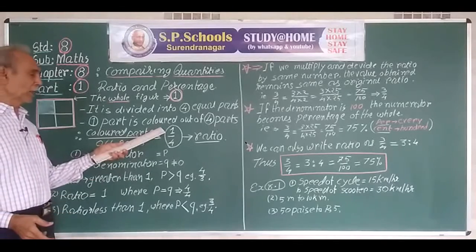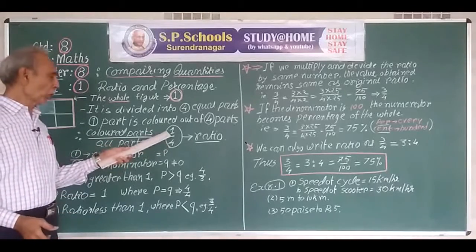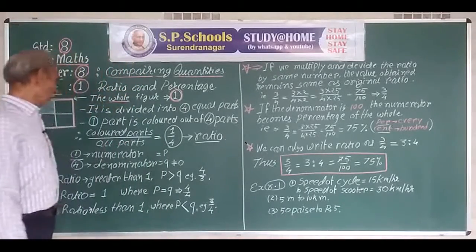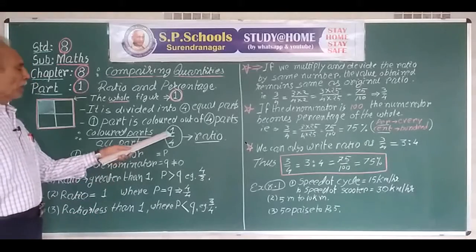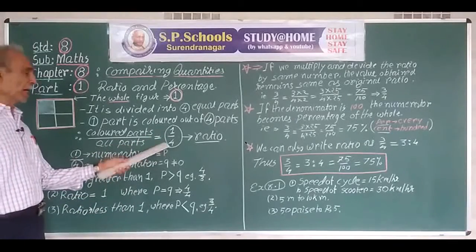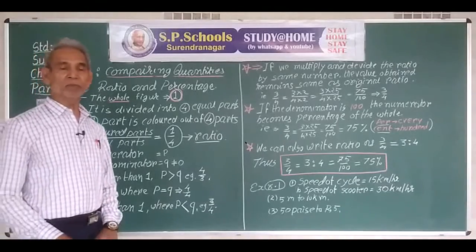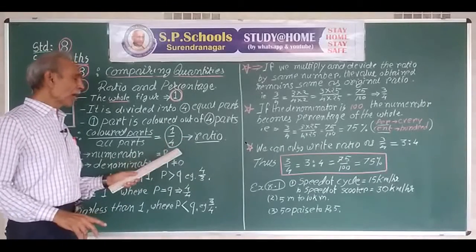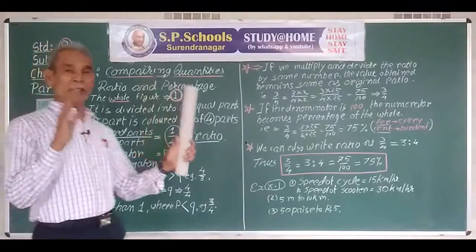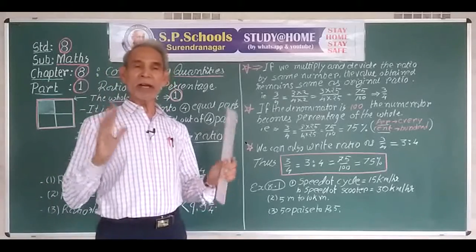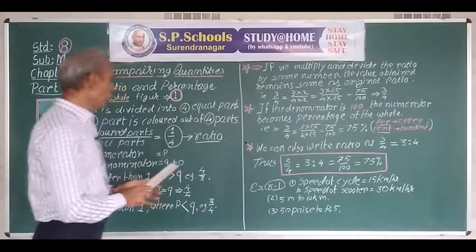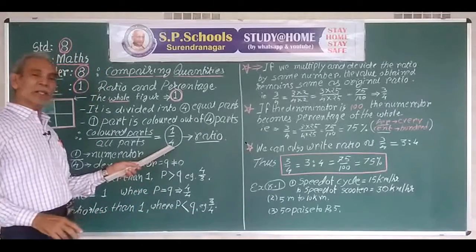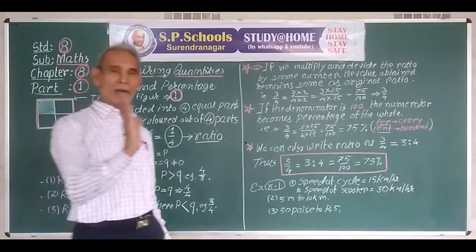Suppose two parts are colored out of four — two upon four parts is colored. In a ratio, we have numbers in the numerator and denominator. The denominator implies that the whole thing is divided equally into parts equal to the denominator. Suppose there is five in the denominator — the whole thing is divided into five equal parts.